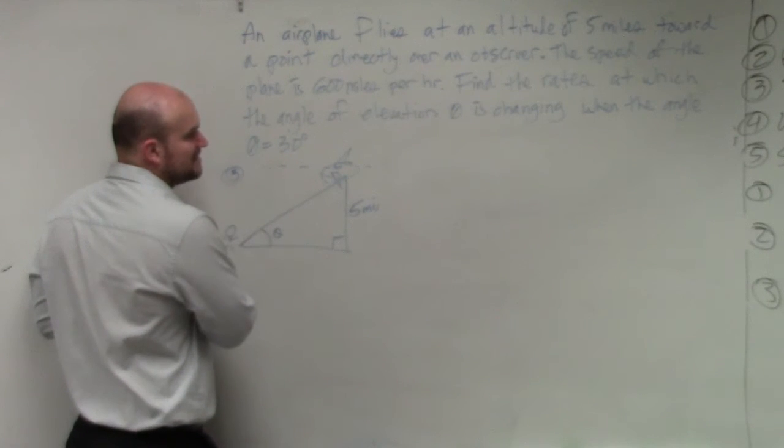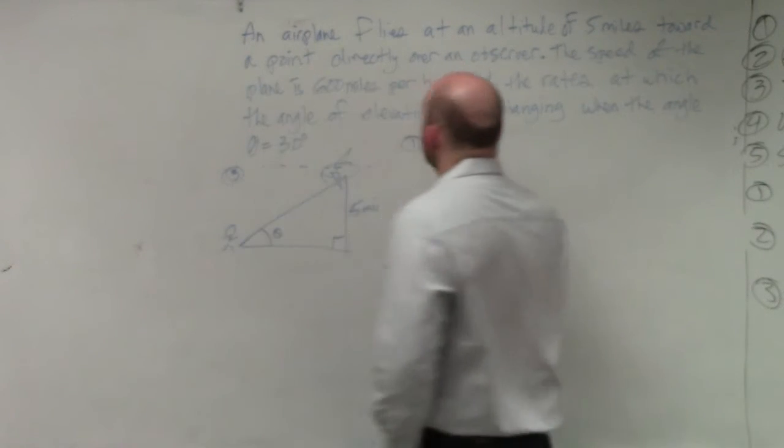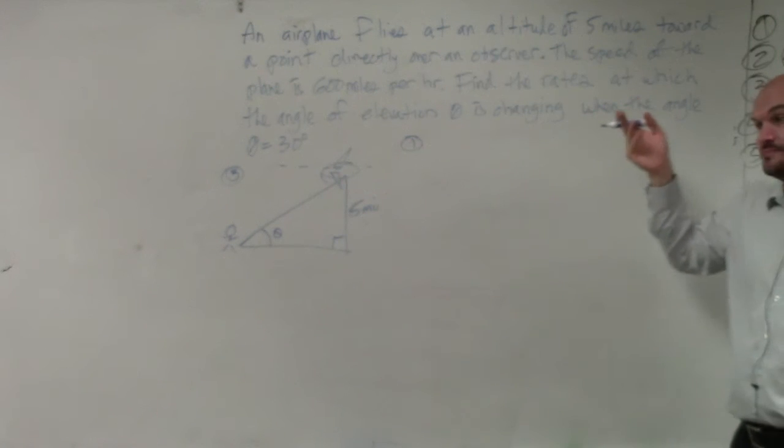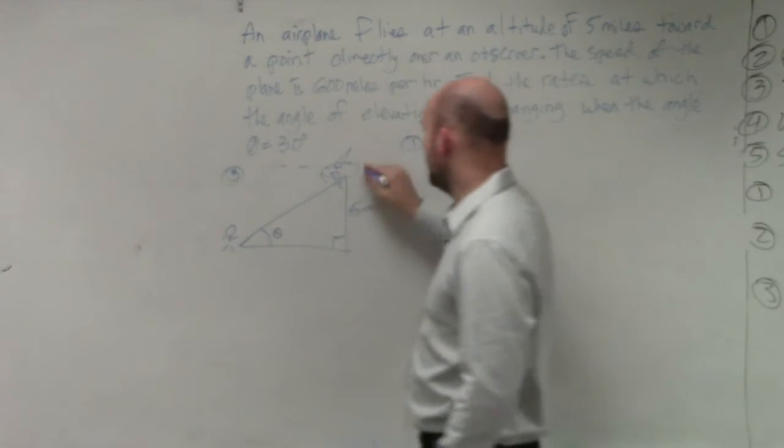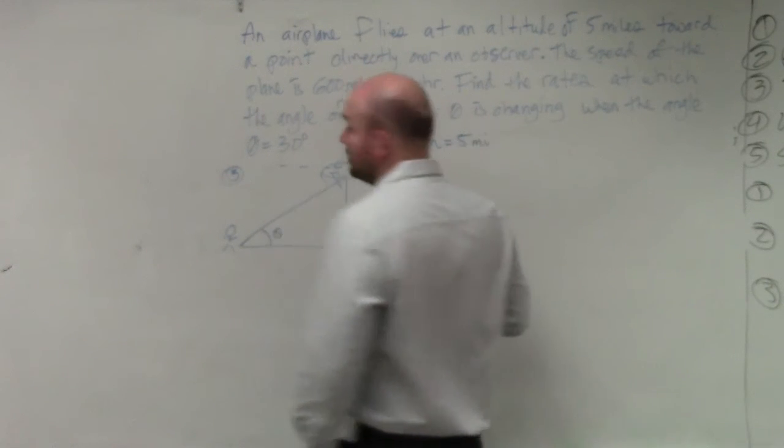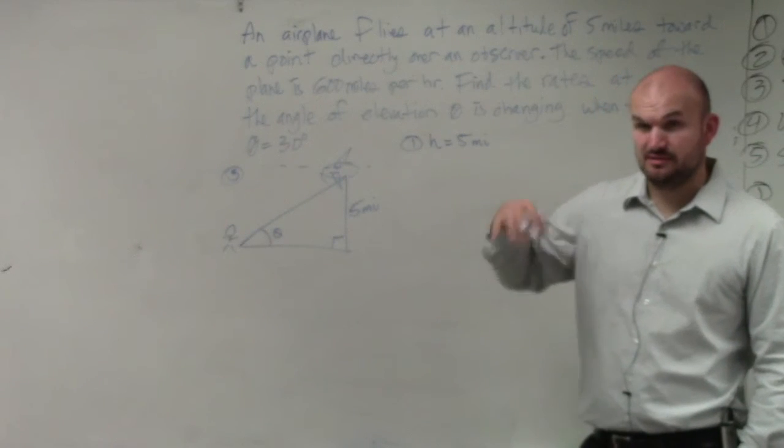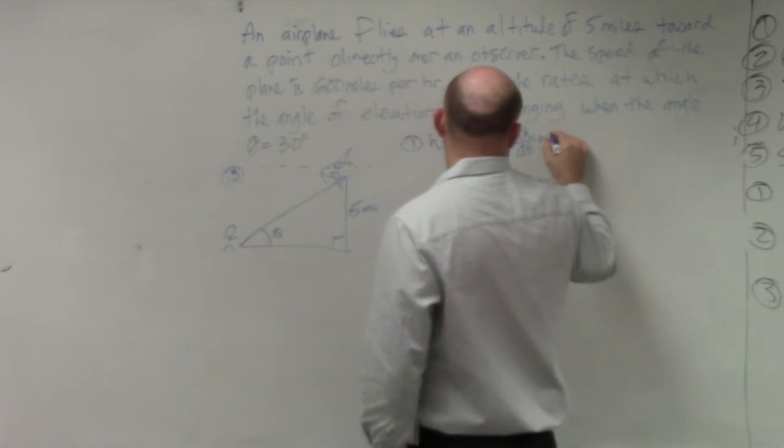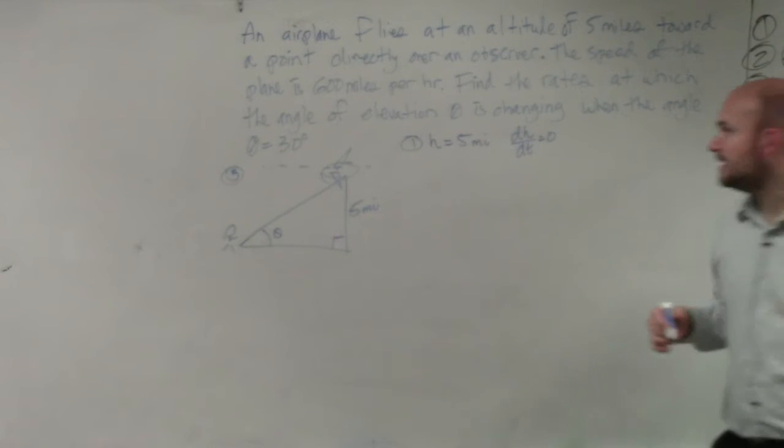Now, there's a couple of things that we know as far as defining our variables. We know that the speed, or I'm sorry, we don't know how far. Actually, let's just go with this. We know our height here is five miles. We know that dh/dt, the change in the height as this plane is flying, is going to be zero. Would you guys agree that the height is not changing at all? Correct?